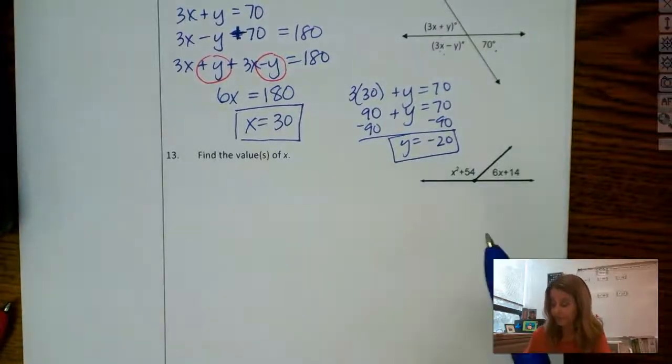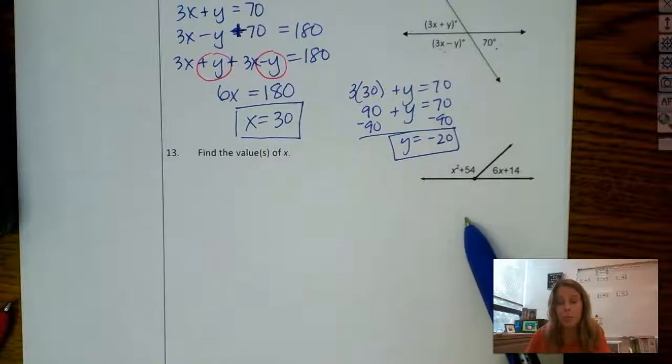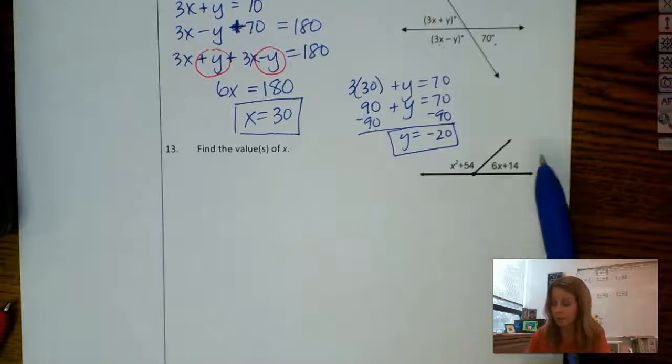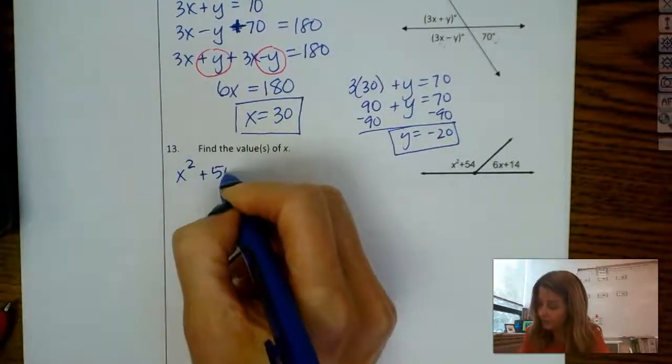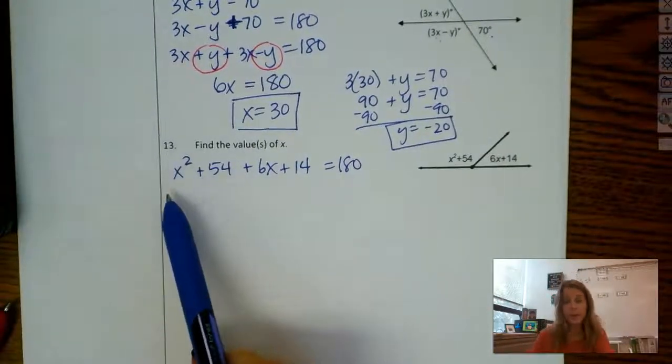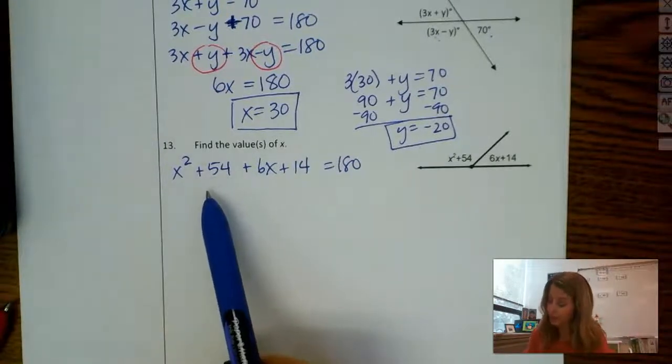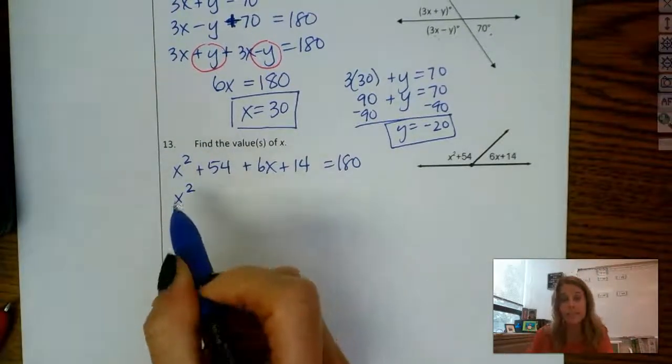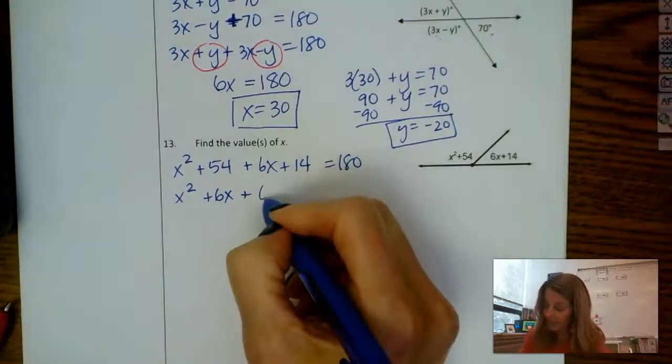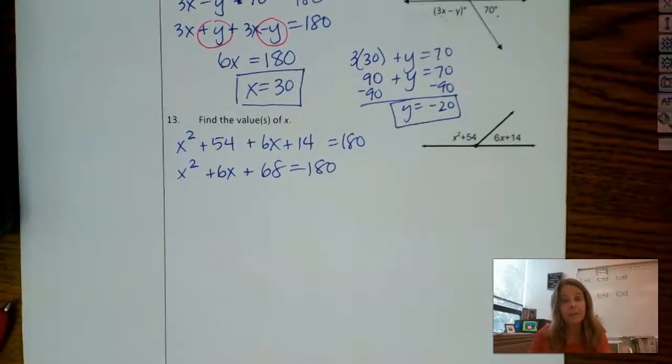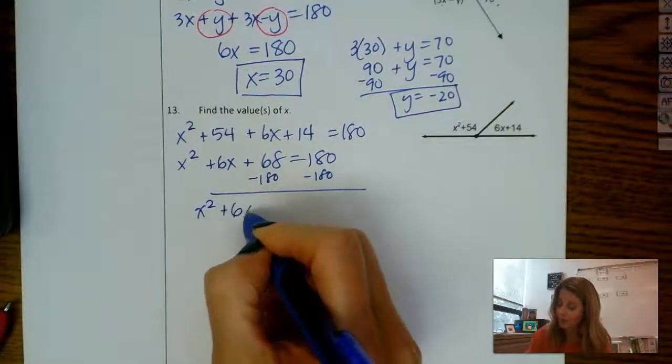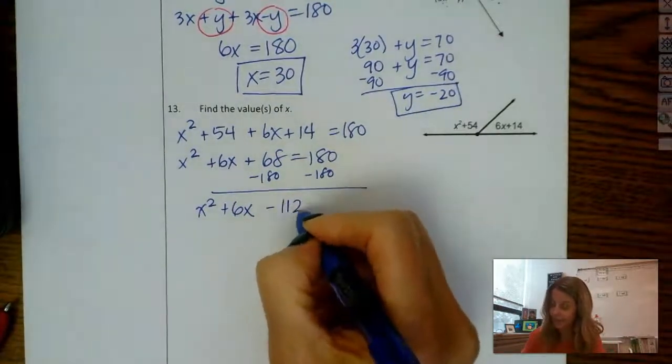Last question. Again, find the value or values of x. So interpret the diagram. What do you see, and how can you set that up? So I see a linear pair, two angles along a line. The relationship between a linear pair is they're supplementary. So I can do x squared plus 54 plus 6x plus 14 equals 180. All right, x squared, probably going to have to factor here, or quadratic formula, but we'll factor. Let's combine terms here, and I'm going to write this in standard form. So x squared, I'm going to bring the 6x next. 54 plus 14 is 68. That's 180. I cannot factor unless I have a 0 here. So let's move the 180 over. So I have x squared plus 6x. I have 68 minus 180 is negative 112 equals 0.